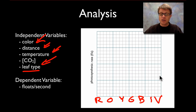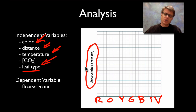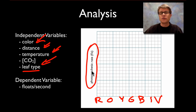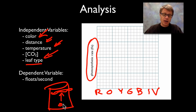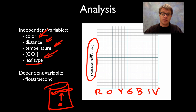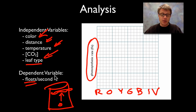We can graph these results as histograms, or as line graphs for continuous variables like increasing temperature. The dependent variable — what we're measuring — is the photosynthetic rate in floats per second: how quickly the leaf chad floats to the top. The sooner it floats, the faster the rate. So we measure one float divided by seconds to get the rate.